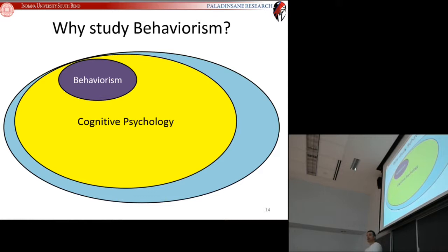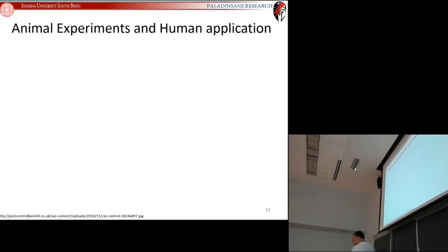Behaviorism got replaced because it couldn't handle all the things cognitive psychology can handle. But the psychology of learning is right in here. Most of what we do in psychology of learning is very well explained by behaviorism. So behaviorism failed because it wasn't wide enough in scope, but we're going to use it because that was one of the things it did very well.